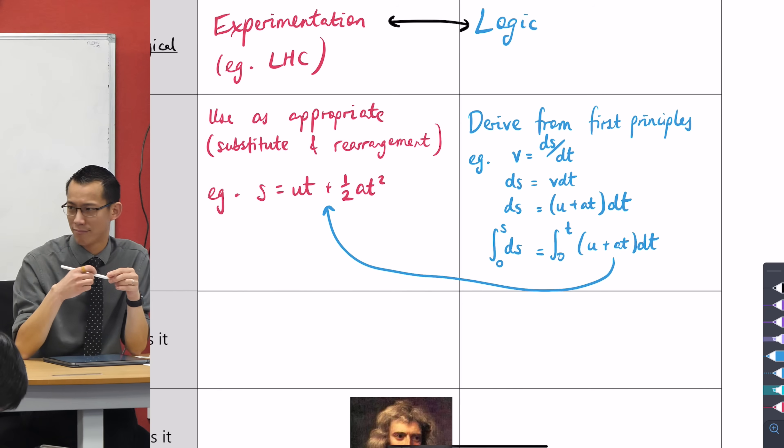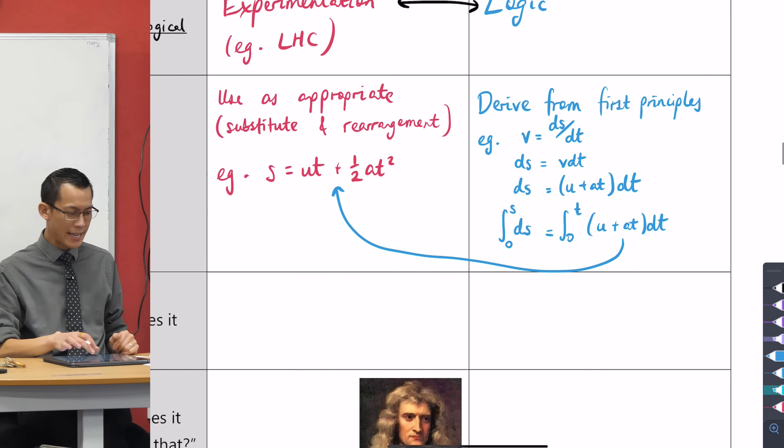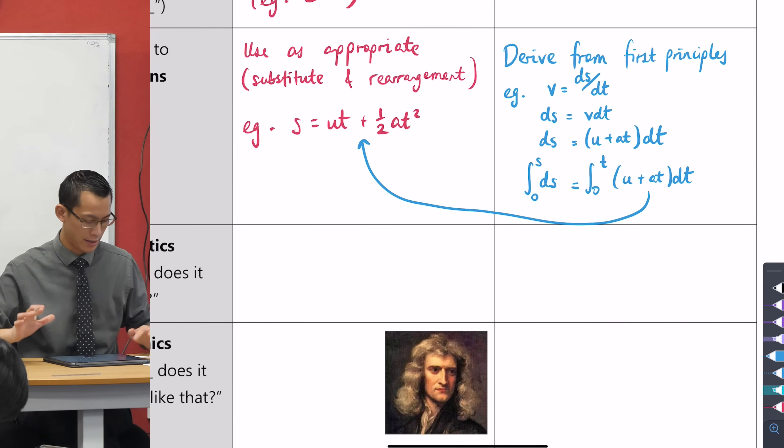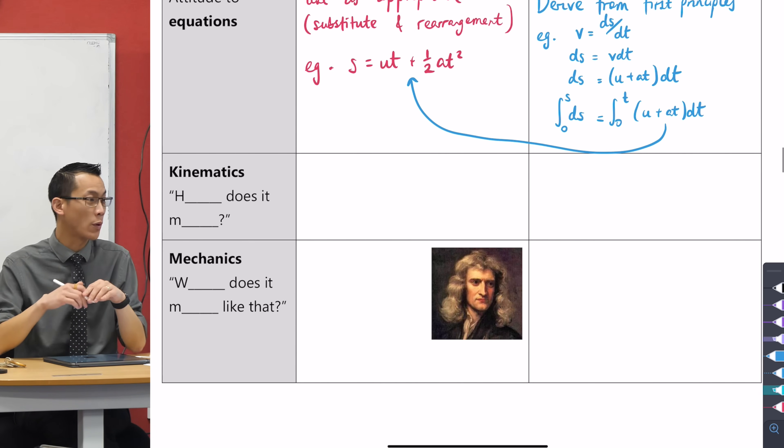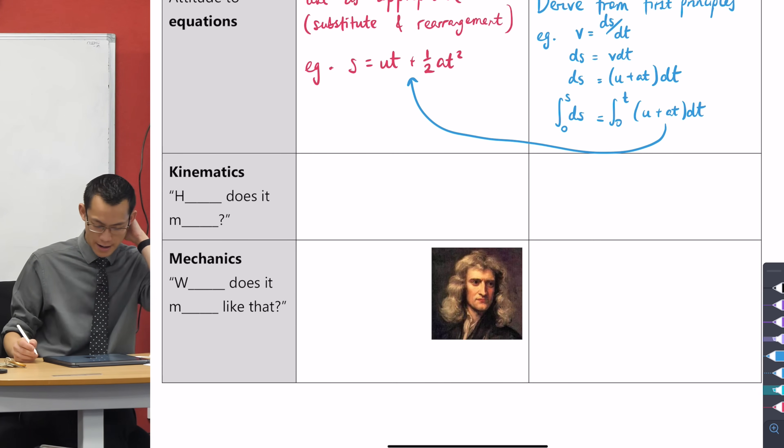In mathematics, we care about that. In physics, you don't need to. You can just quote it, use it as appropriate. Make sense? Now I said motion is a big umbrella term, and the two parts of it that we really care about and we should distinguish between are called kinematics and mechanics.